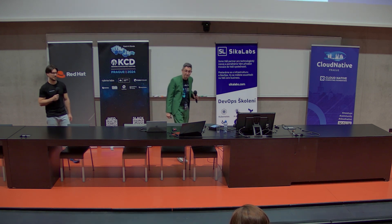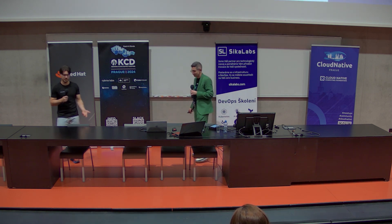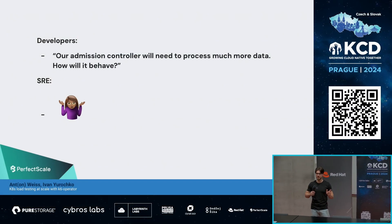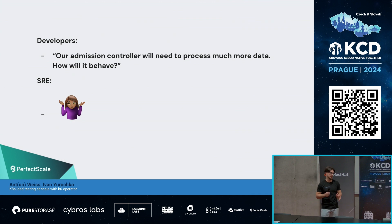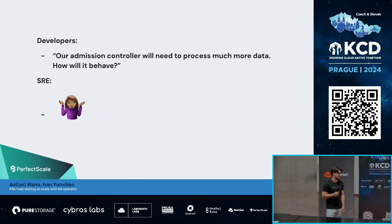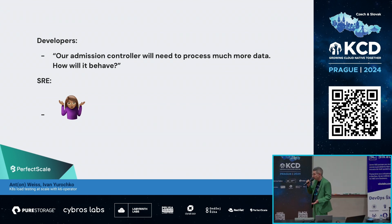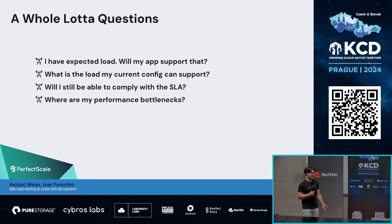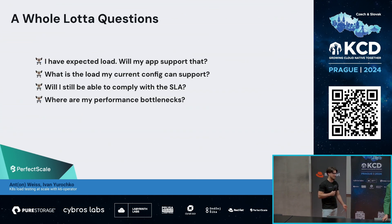Yeah, so a couple of weeks ago — PerfectScale has an admission controller in Kubernetes, we receive a lot of requests and serve them. The question was: hey, we expect to have higher load to our admission controller — how will it behave? And I don't know. So how do you even answer that question? What is the behavior?